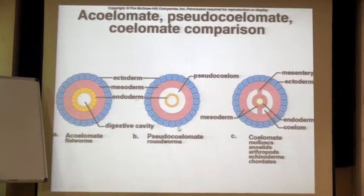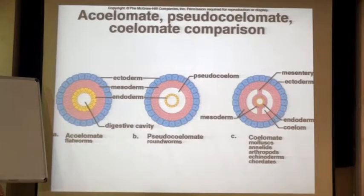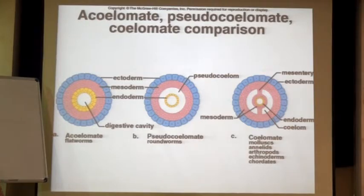You should understand this — it will help you remember the table. If you want to know what acoelomates are, it should immediately click that acoelomates do not have any other cavity apart from the digestive cavity, and that is the reason they are acoelomates.